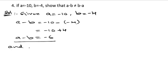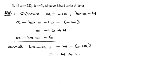Now let us write down b minus a. b is minus 4, minus of minus 10, so minus 4 — minus into minus is plus — 10 minus 4 is 6. So this is the value of b minus a, which is 6. Therefore,